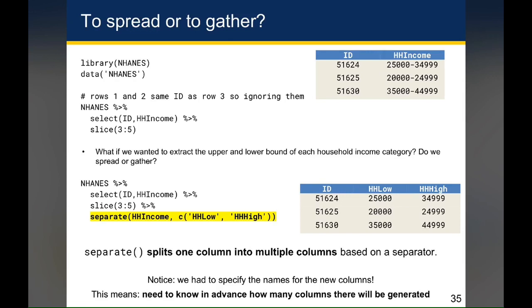So here I sampled three individuals and their household income. And you'll notice that this variable potentially violates one of the tenets of tidy data because it actually contains two values, one of which represents the lower range and one which represents the upper range.